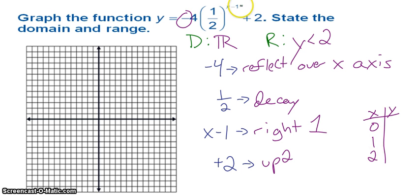If I plug in 1, I have an exponent of 0. Anything to the 0 power is 1. So, 1 times negative 4 is negative 4. Negative 4 plus 2 is negative 2.